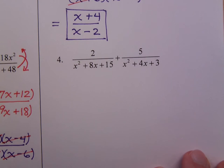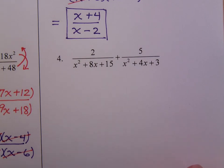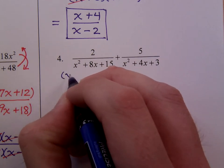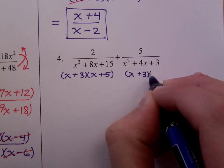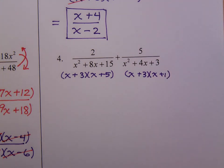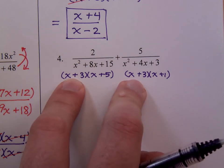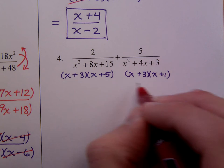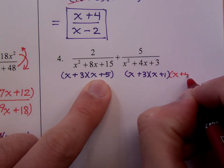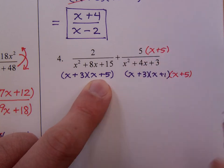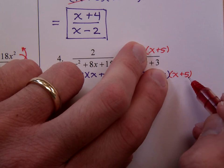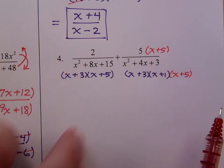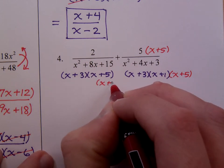In number 4, we do not have common denominators, but we can easily get that. We have to factor these denominators. This guy factors as x plus 3 times x plus 5, and this factors as x plus 3 times x plus 1. You'll see that they already have the x plus 3 in common. This guy is missing the x plus 5, so I can put in the missing factor here. But I also have to put that in the numerator. x plus 5 over x plus 5 is a form of 1. Likewise, this guy is missing the common factor of x plus 1.